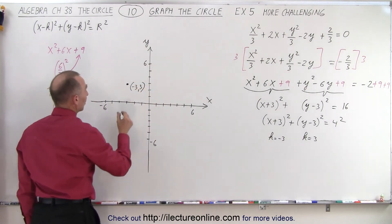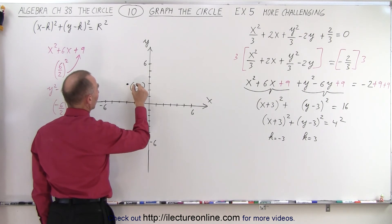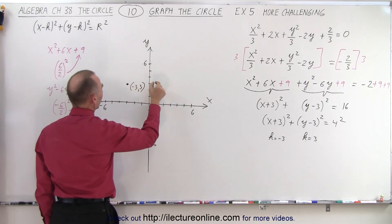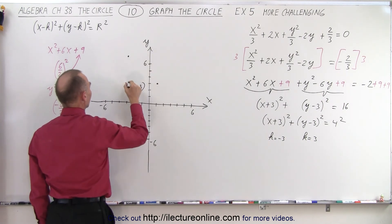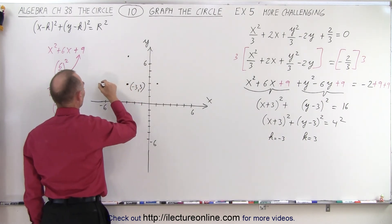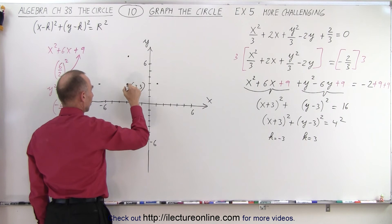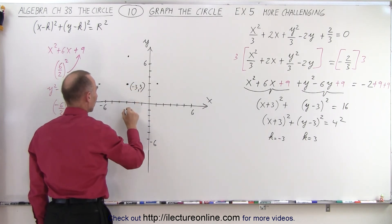The radius is 4, so we find a point 4 units to the right, 1, 2, 3, 4. 4 units up, 1, 2, 3, 4. 4 units to the left, 1, 2, 3, 4. And 4 units down, 1, 2, 3, 4, like this.